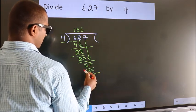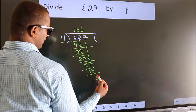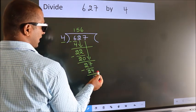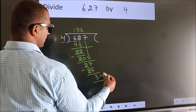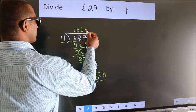Now we subtract and get 3. No more numbers to bring down, so we stop here. This is our remainder. This is our quotient.